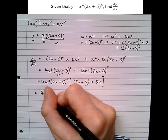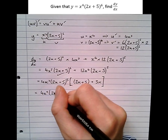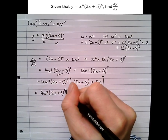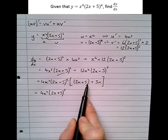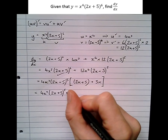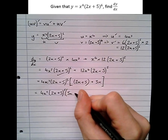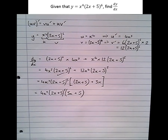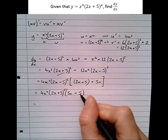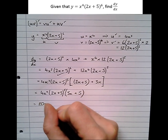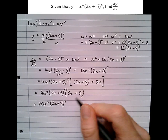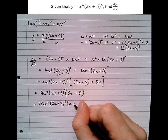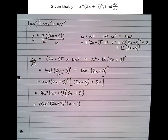This gives us 4x cubed times (2x plus 5) to the 5, times the bracket (2x plus 5 plus 3x). Simplifying inside the bracket: 2x plus 3x is 5x plus 5, and we can take out a factor of 5. Bringing the 5 to the front, the fully factorised answer is 20x cubed times (2x plus 5) to the power of 5 times (x plus 1).